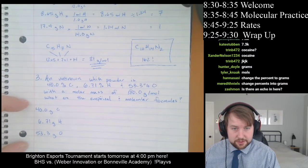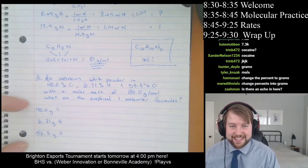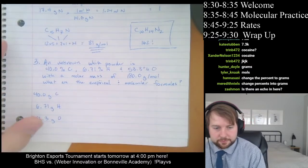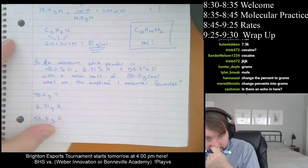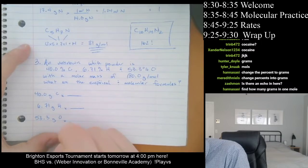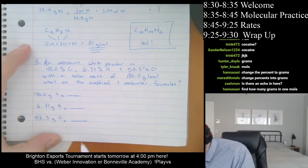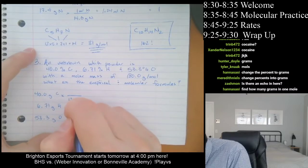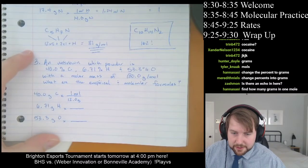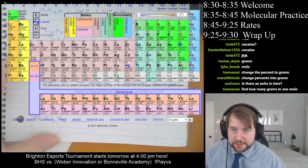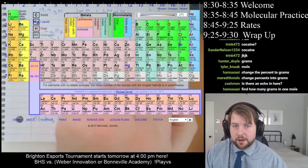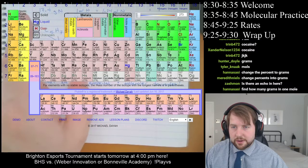Then we take those gram values and find out how many moles they are. So we use the periodic table. Carbon is 12 grams per mole, oxygen is 16, and hydrogen is 1.